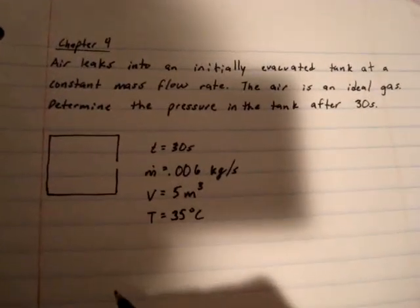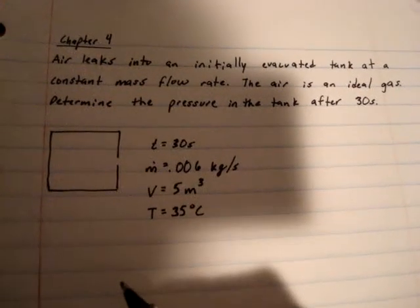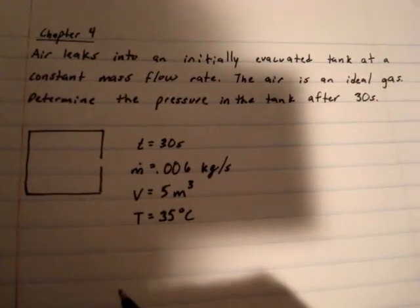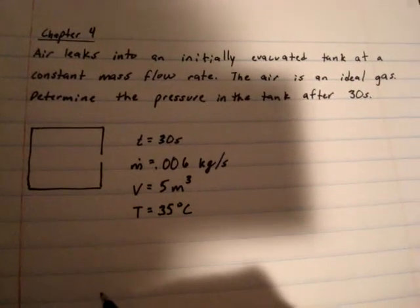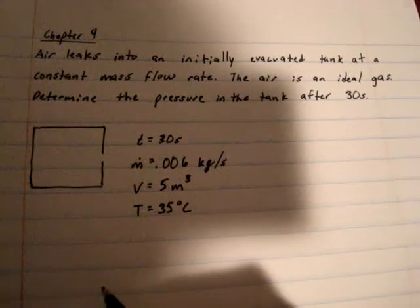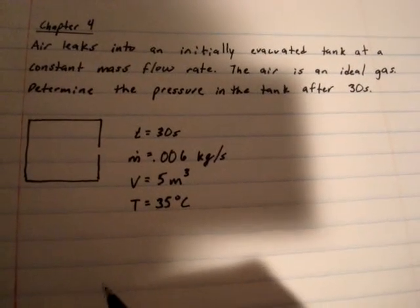Hello folks. Right now I'm going to solve a thermodynamics problem from chapter 4. The problem is: air leaks into an initially evacuated tank at a constant mass flow rate. The air is an ideal gas. Determine the pressure in the tank after 30 seconds.